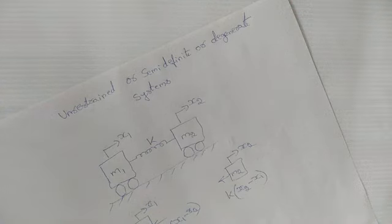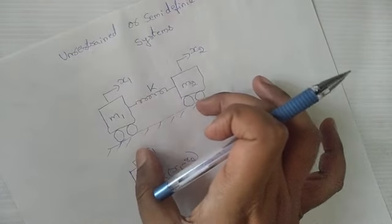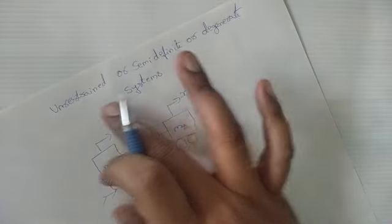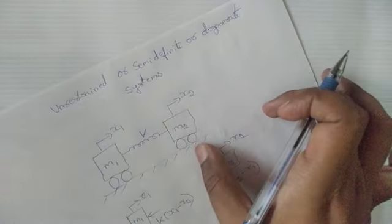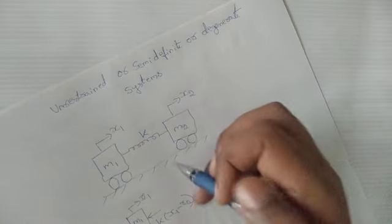Today we look at a topic: unrestrained, semi-definite, or degenerate systems. The meaning is the system can move freely, so it is called unrestrained. The other names are semi-definite or degenerate systems — all three names refer to a system which can move freely.